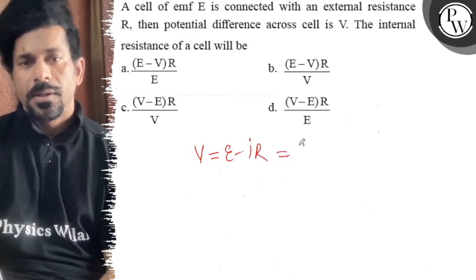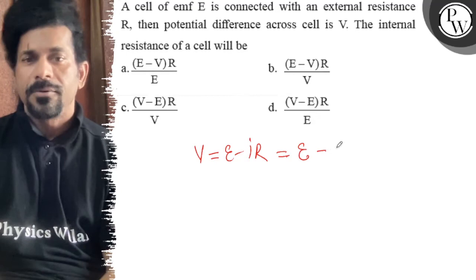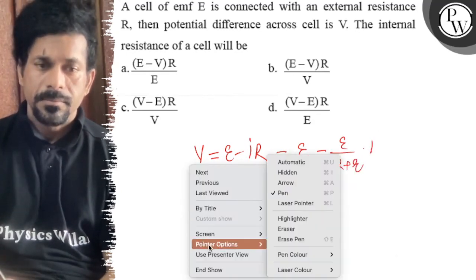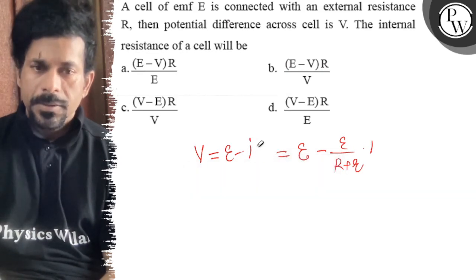Or E minus I, what will that be? E upon capital R plus small r into E small r. E small r.